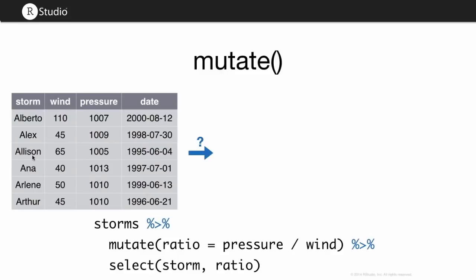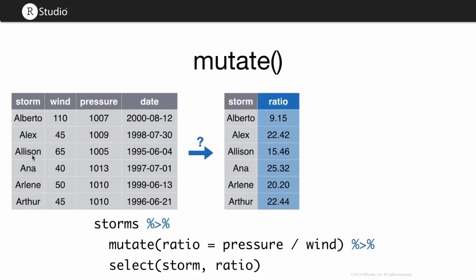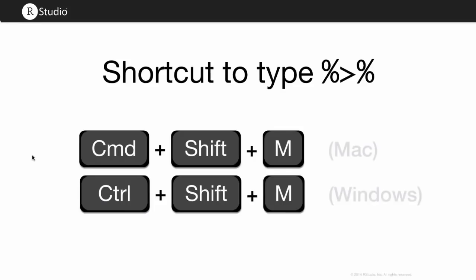So you should be able to guess what something like this would do. If you start with storms, then you mutate it to create a ratio variable, and then you select just the storm variable and the ratio variable, what would your output look like? Something like this. If you don't like typing percent greater than percent, there's a keyboard shortcut for that operator. It's Command-Shift-M on Mac and Control-Shift-M on Windows.